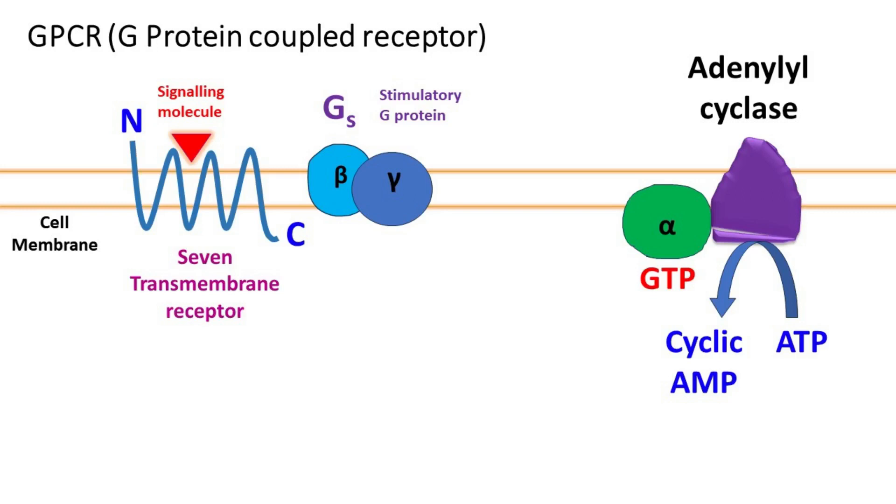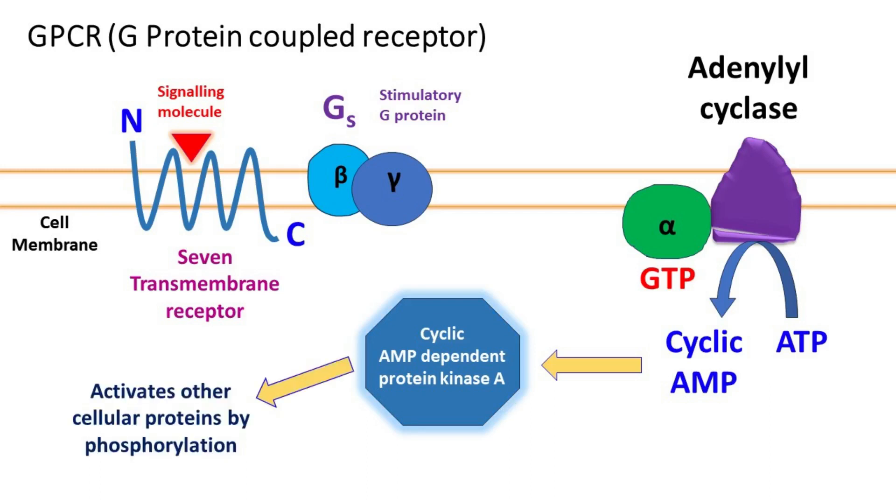The cyclic AMP further activates cAMP-dependent protein kinase A. The activated protein kinase A further activates other cellular proteins by phosphorylation.